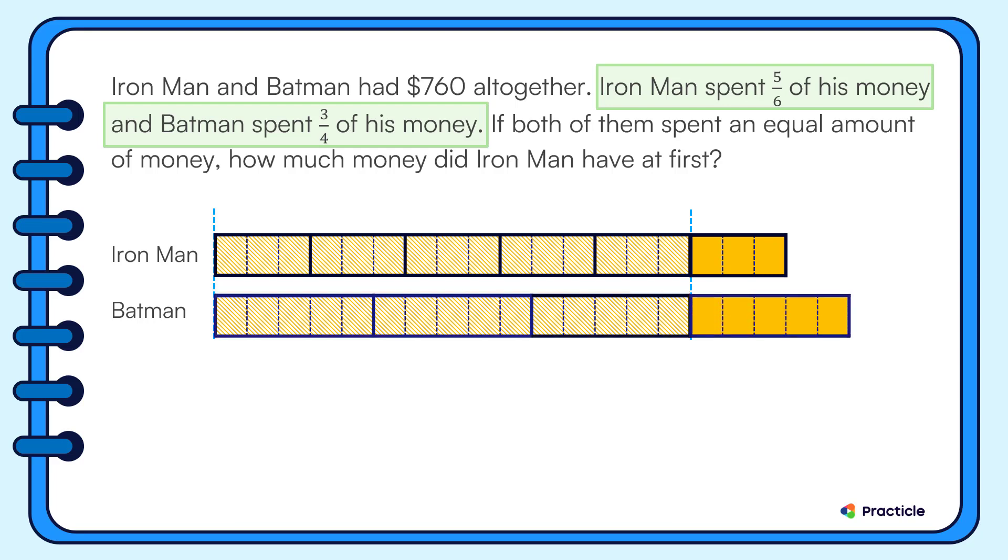Now that all the units are of the same size, let's go back to the first sentence. Iron Man and Batman had seven hundred and sixty dollars altogether. Now, we can tell that these thirty-eight smaller units represent a total of seven hundred and sixty dollars.